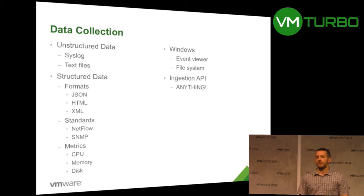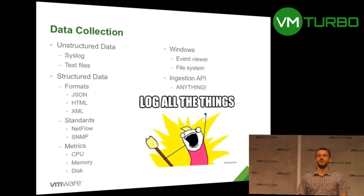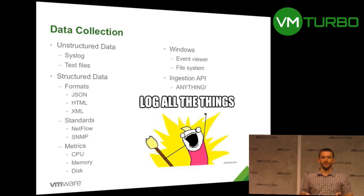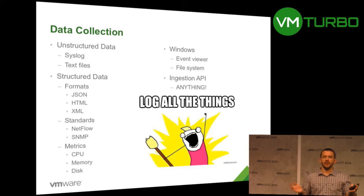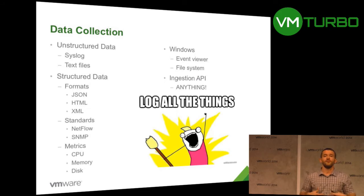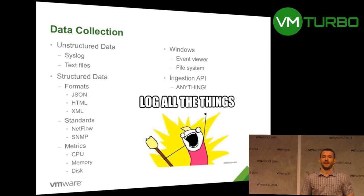The ingestion API really allows you to collect anything, in any protocol, and any language you want to write it in — it's just an HTTP request. So really the goal is to log absolutely everything in Log Insight. You're probably thinking about vSphere, vCAC, vCOps — and those are great use cases — but it works for all your infrastructure: your compute, network, storage arrays, all the VMs on top of that, both the operating system and all the applications. You really need log samples from all those devices to get true value.